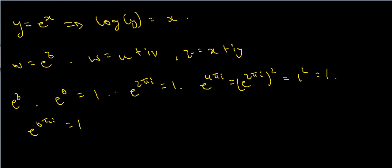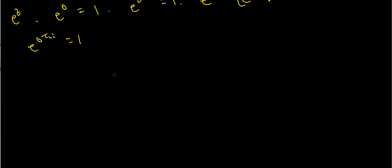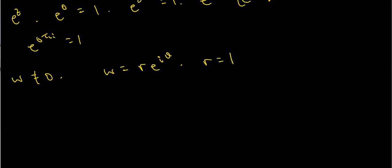There is a way to get around this issue. The first thing I'm going to do is let w be a complex number as above, but non-zero, because if it is zero I will run into a problem taking logarithms. Since w is a complex number, let me write w equal to r e to the iθ, where r is just the modulus of w — the length of this complex number — and θ is the argument of w.